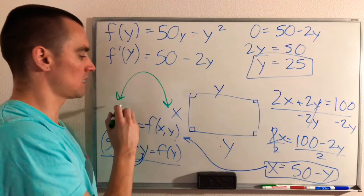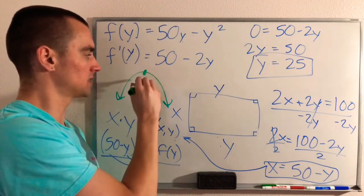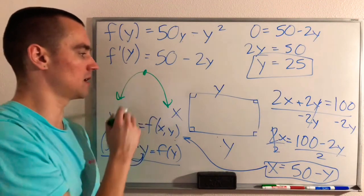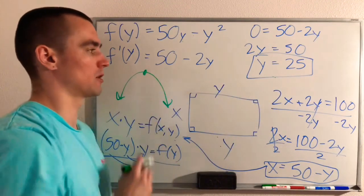So what that means is a parabola we know is always going to have one critical number. And if it's a downward-facing parabola, we could see pretty clearly that it's going to be at the maximum. So Y equals 25 is going to be where our maximum occurs.